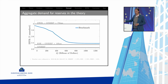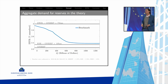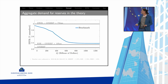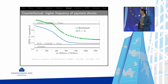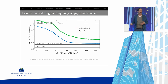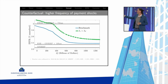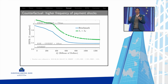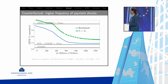One benefit of the structural model is doing counterfactuals. First counterfactual: if we increase the frequency of payment shocks — clients are trading a lot and disrupting planned end-of-day balances — the demand for reserves shifts up. It's a precautionary motive: you're worried about frequent shocks putting you in the negative, so the marginal value of reserves shifts up. That's intuitive.